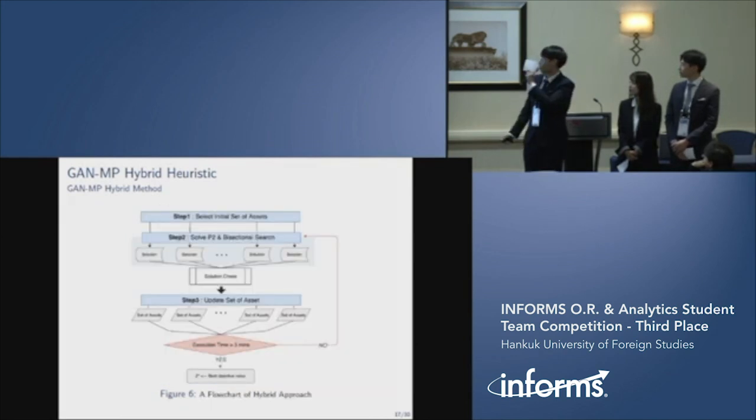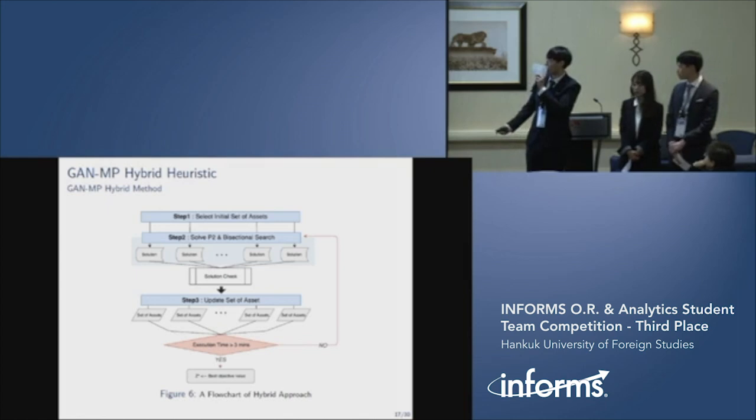For the initial setup assets obtained from each trained GAN, we found the feasible solution in step 2. After that, the obtained solutions were compared in solution check area. We picked the top half of solutions and executed step 3 based on this solution. For the remaining solutions, we discarded them and initiated step 1. After finishing our procedure, the algorithm provides us the best solution.